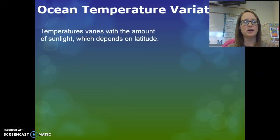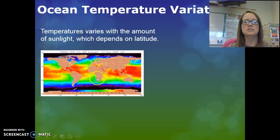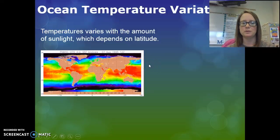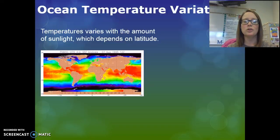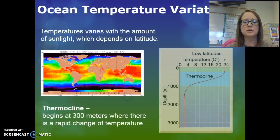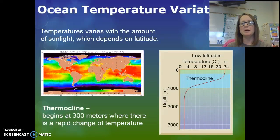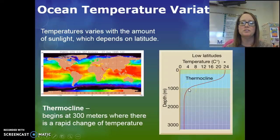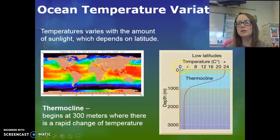Ocean temperatures also vary, depending on the amount of sunlight that reaches the surface, which depends on latitude. Around the equator we have the highest amount of sunlight, so we have the highest surface temperatures. As you move into higher latitudes towards the north and south poles, sunlight is at a lower angle and temperatures at the surface are much cooler. Sunlight can penetrate the water to about a depth of 300 meters. Once we get down to 300 meters, there's a sudden, very quick drop-off of temperature called the thermocline — therm meaning heat. After that, there's a steady cold temperature, always staying above freezing; only at the surface do we find ice in the ocean.